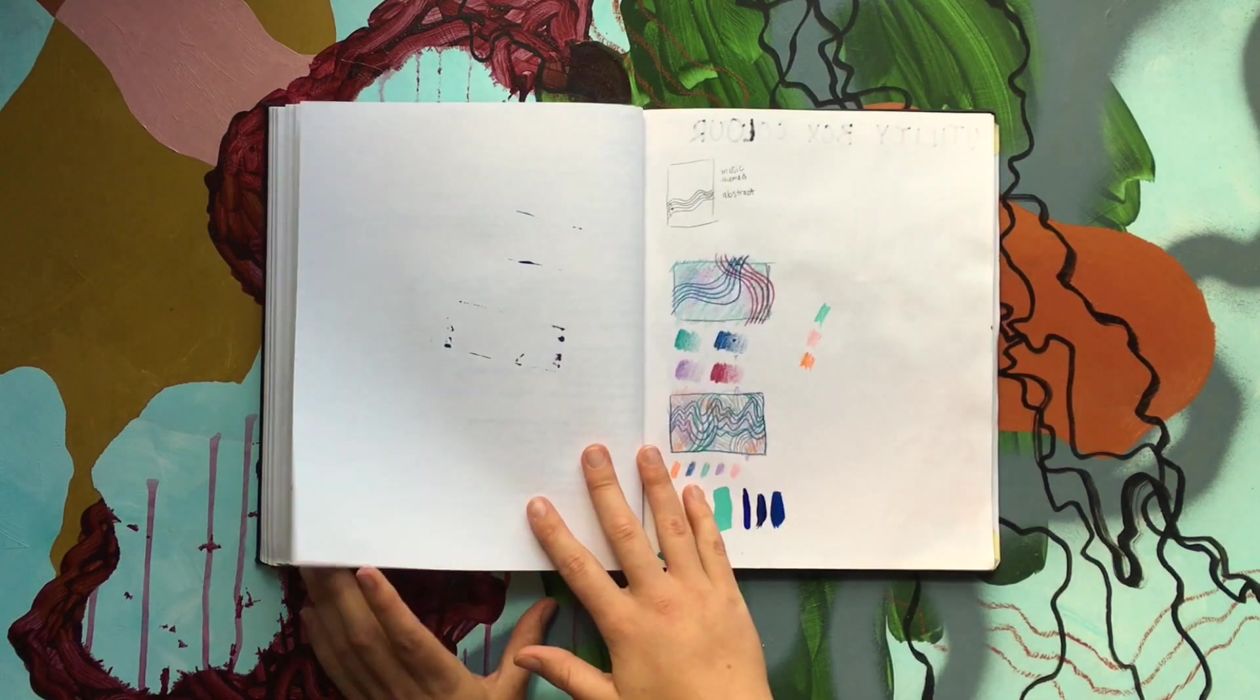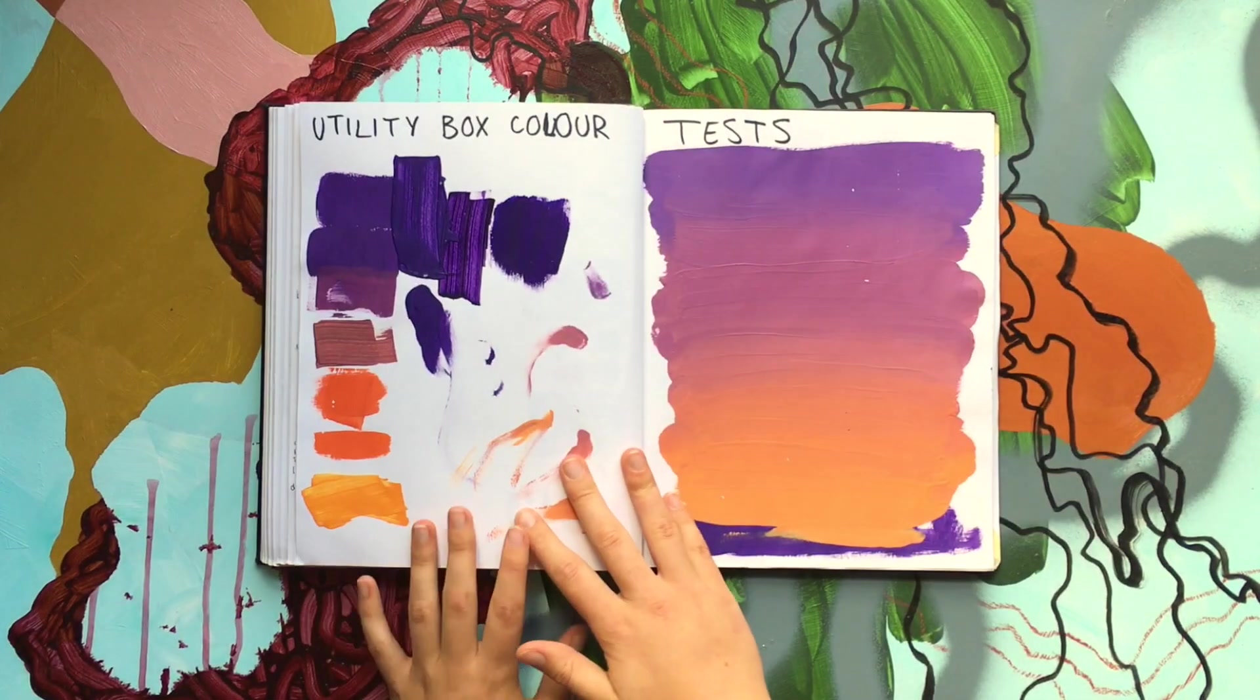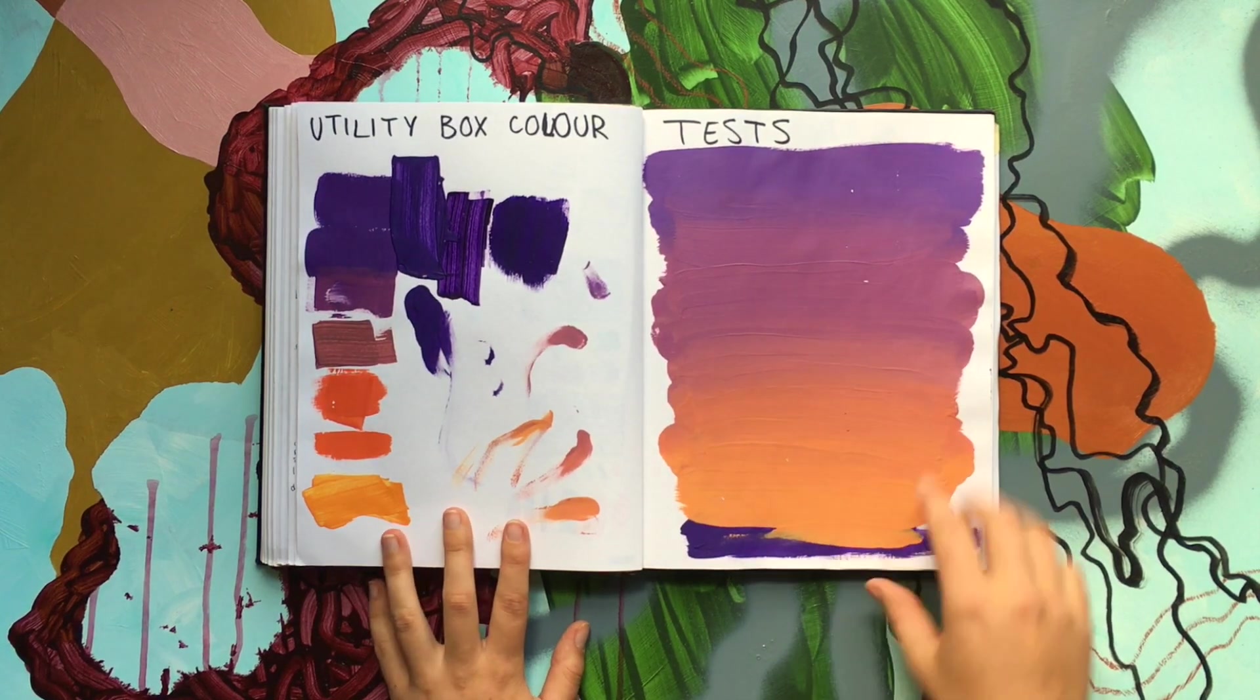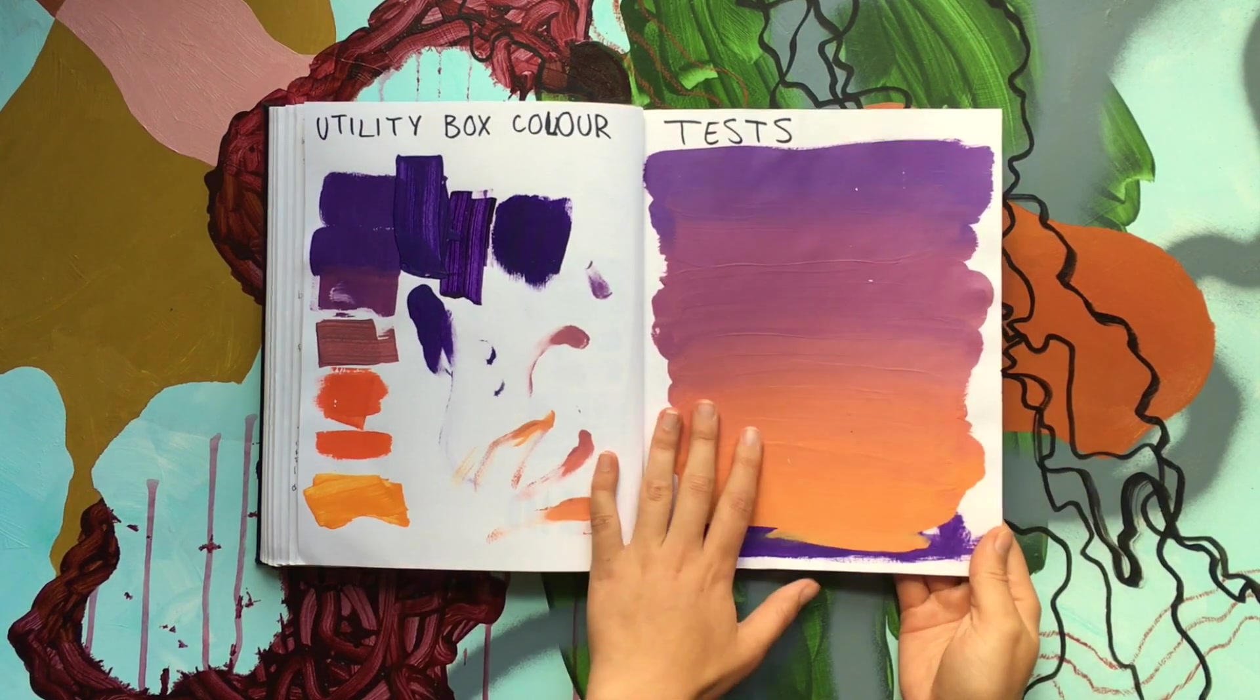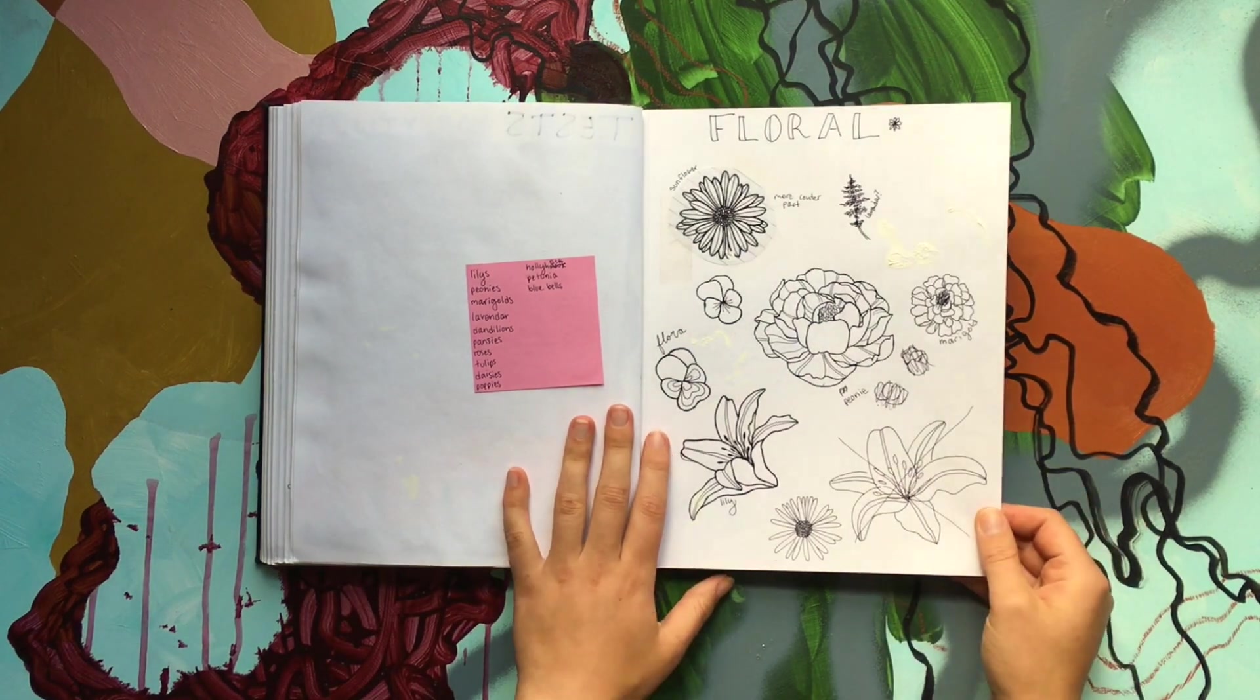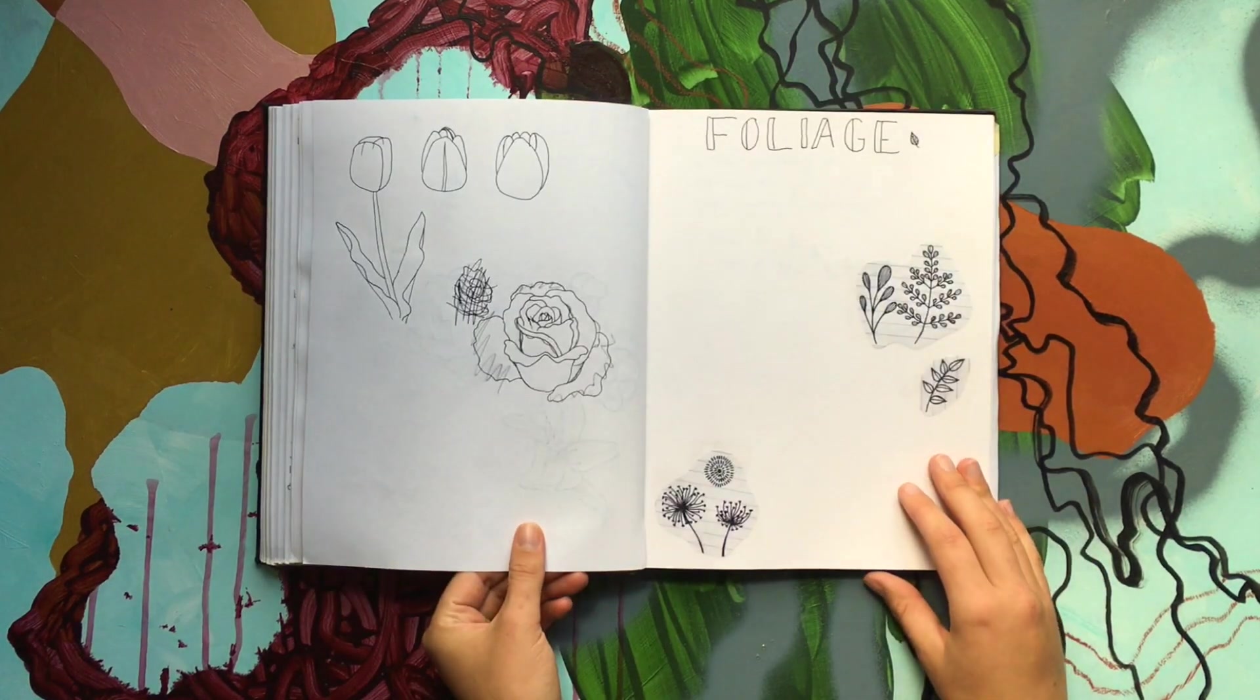This is just a list of shows that I wanted to submit to with deadlines and stuff. And then the utility box. These are all the paints and then I tested out kind of the colors and how to blend them properly. And then these are some drawings of the flowers that I did. These are cool. I like these ones.